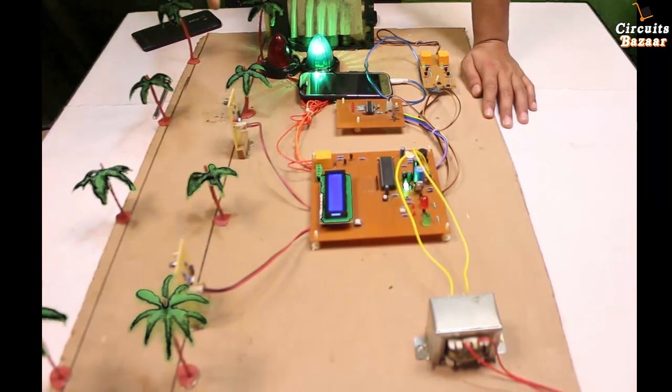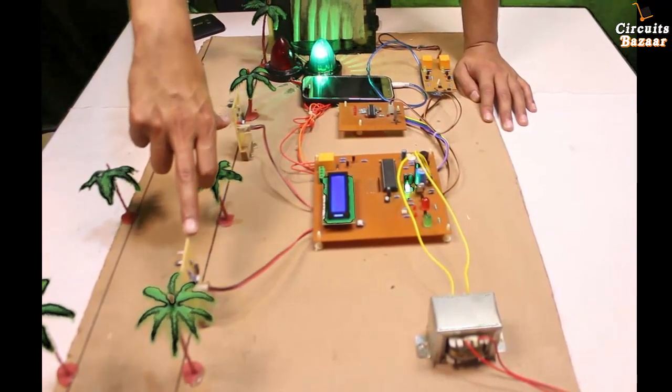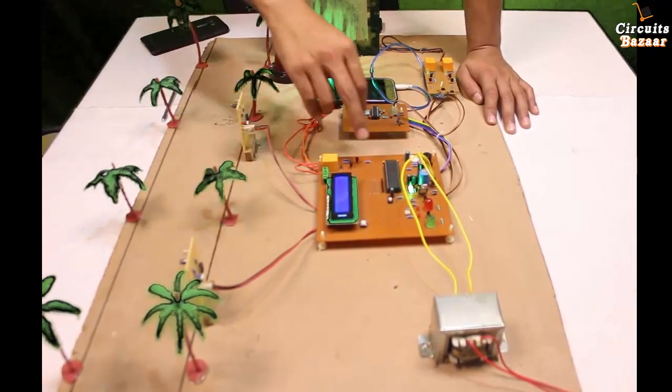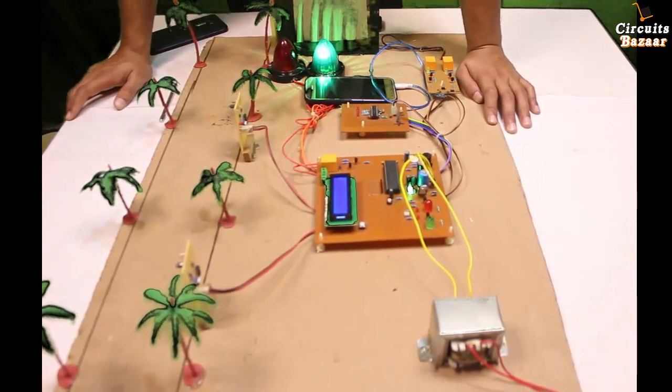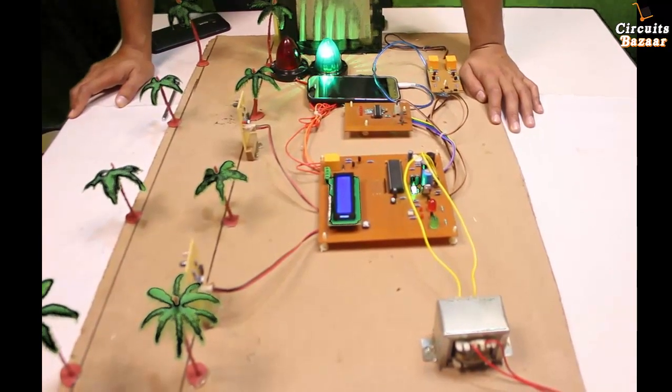Then it will start calculating the speed because as you know that you have two sensors. Distance between this and this is known. And time you will calculate through the microcontroller. So the formula for the speed is very easy. If you have distance and time, then you can easily calculate what is the speed.